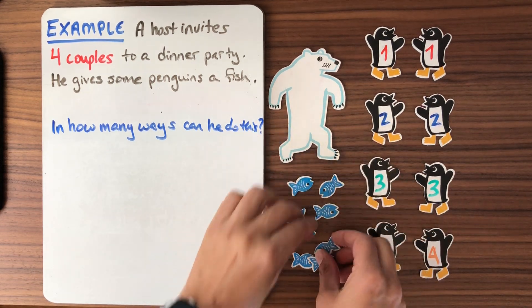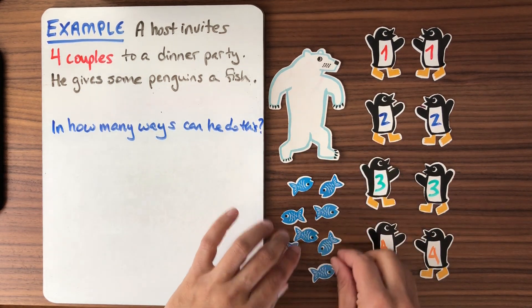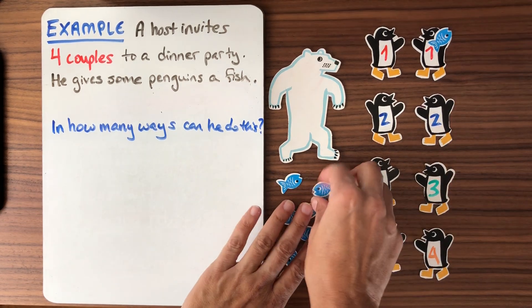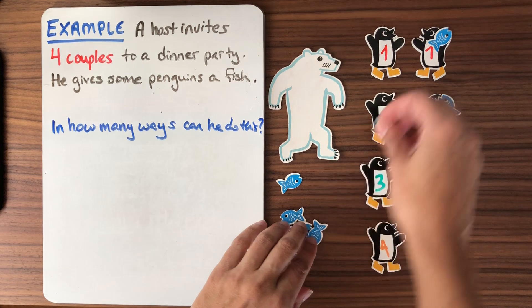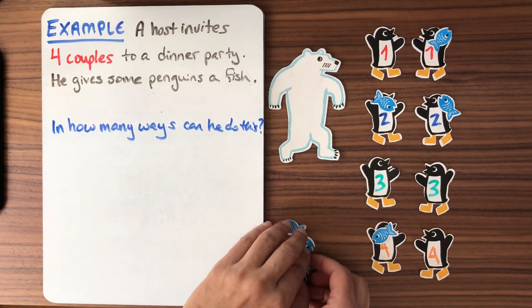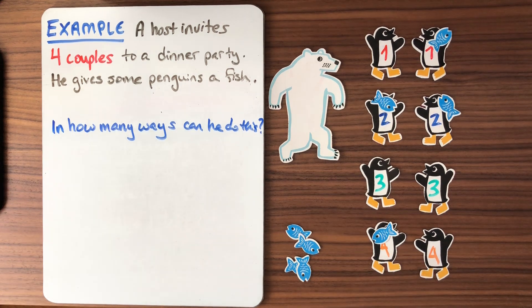In how many ways can he do this? So here's a bunch of fish. He's going to give them to some of them. Maybe he gives a fish to that penguin, and maybe to that penguin, and that penguin, and that penguin, and that's it. Maybe he keeps all the rest of the fish for himself. So the question is, how many different ways could he do this?